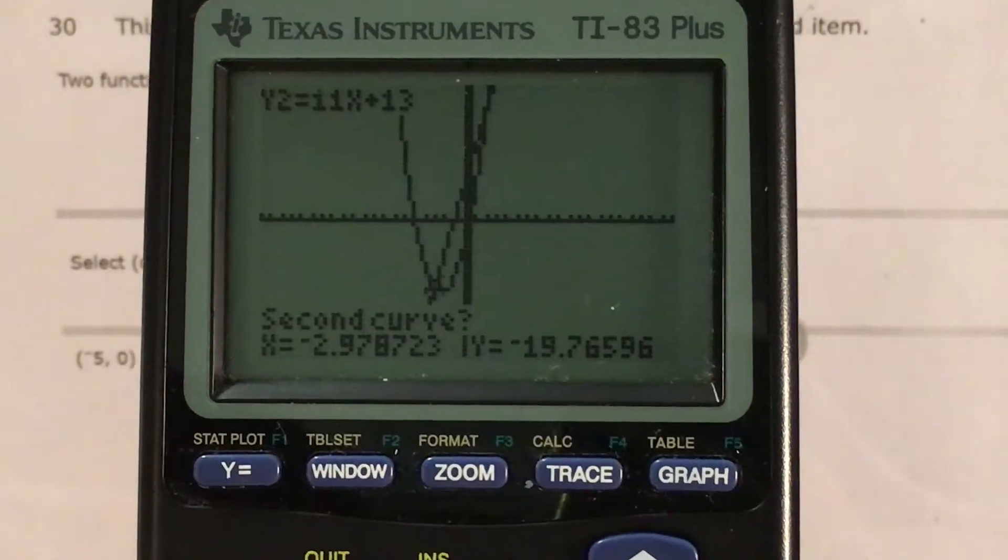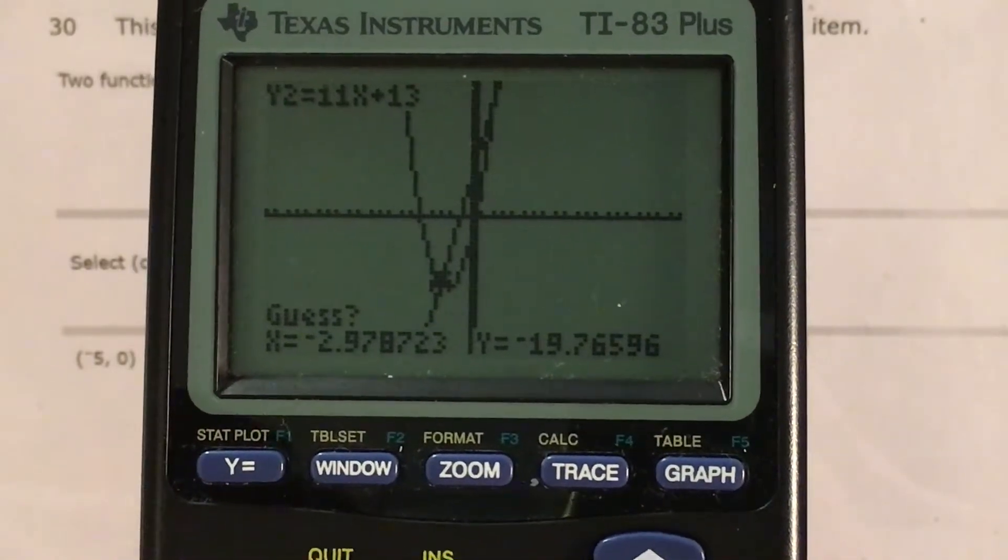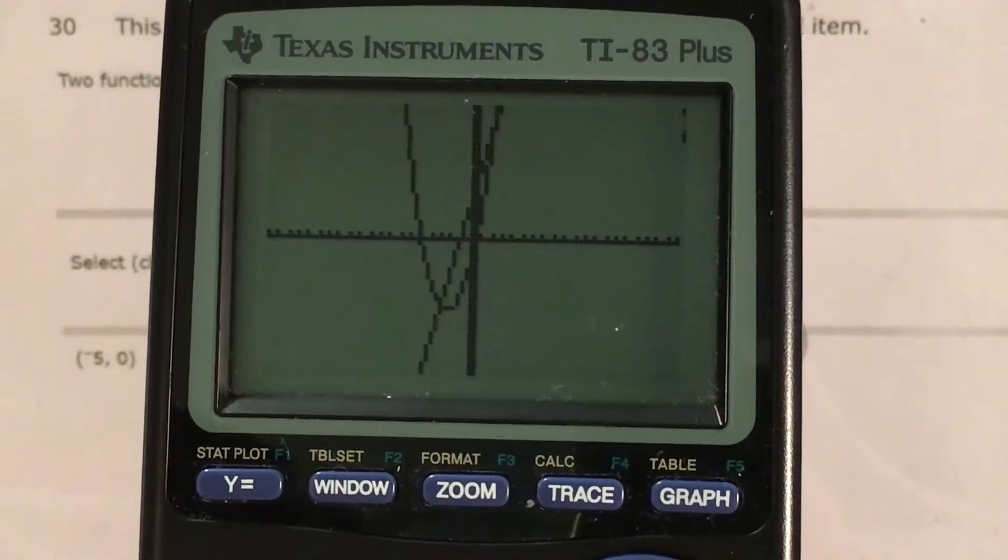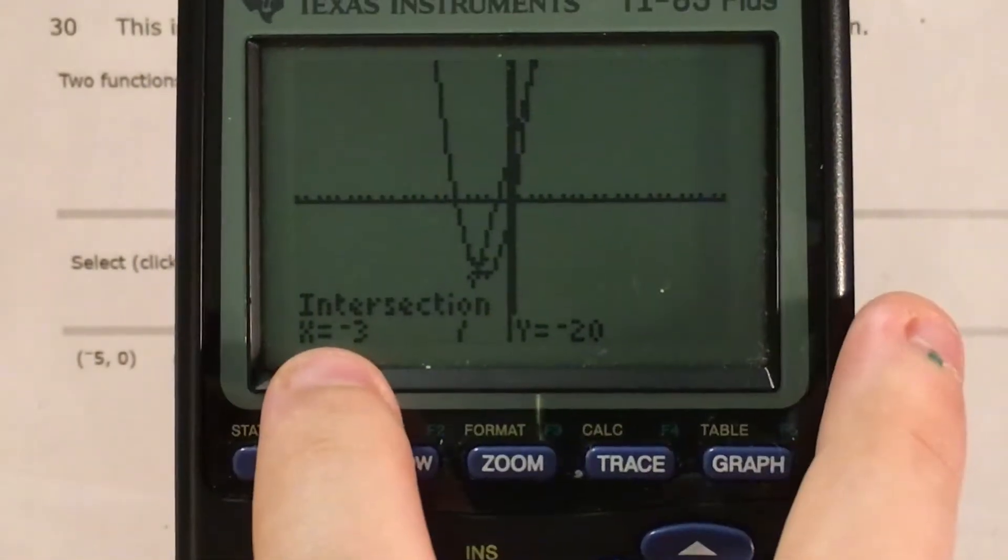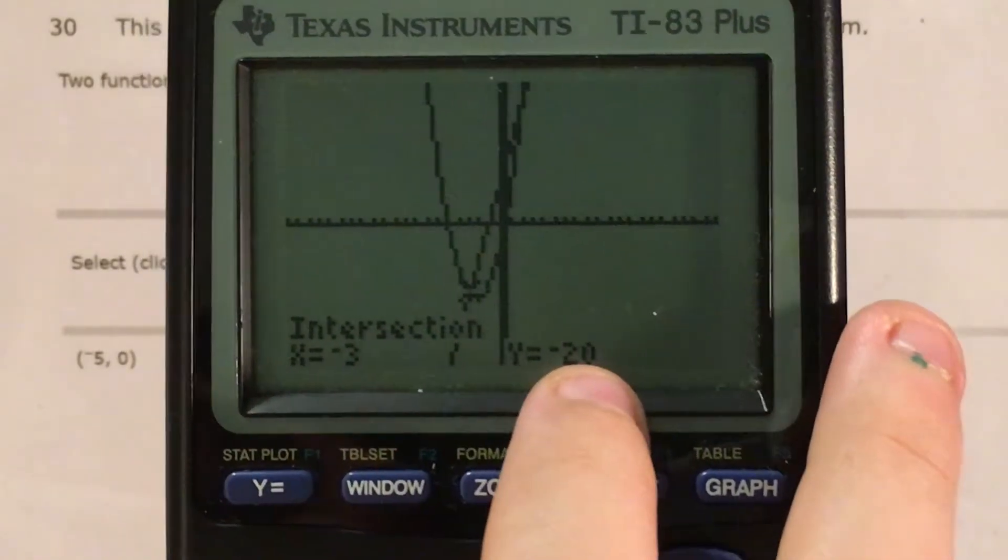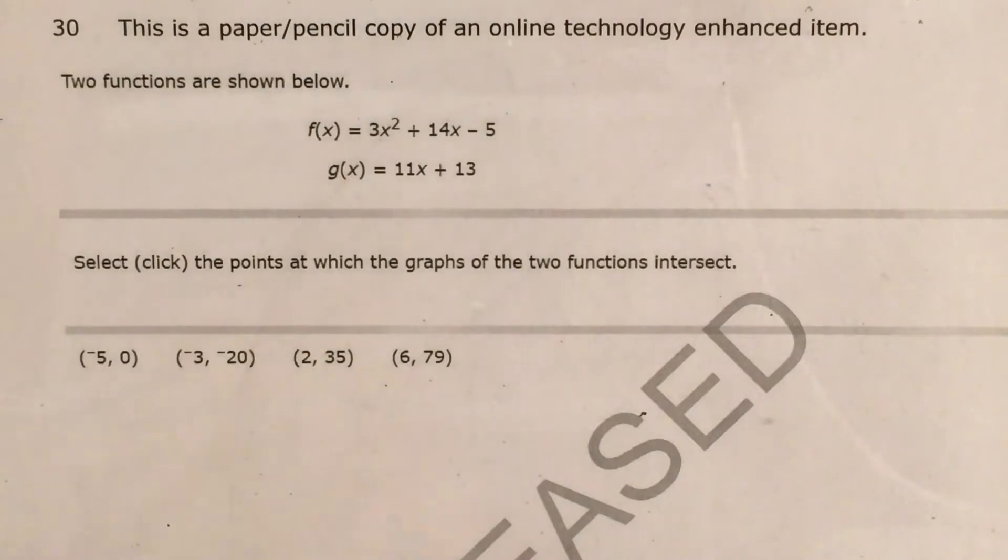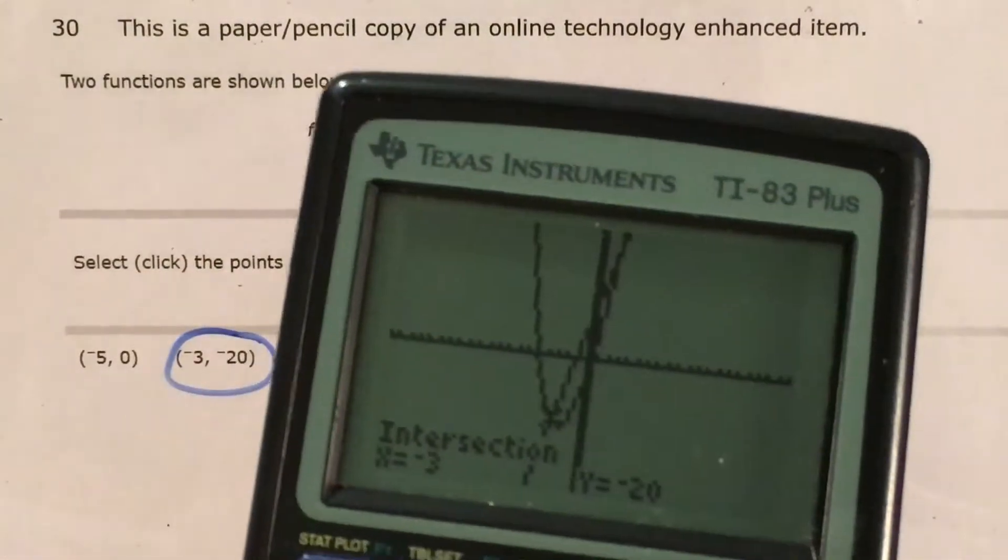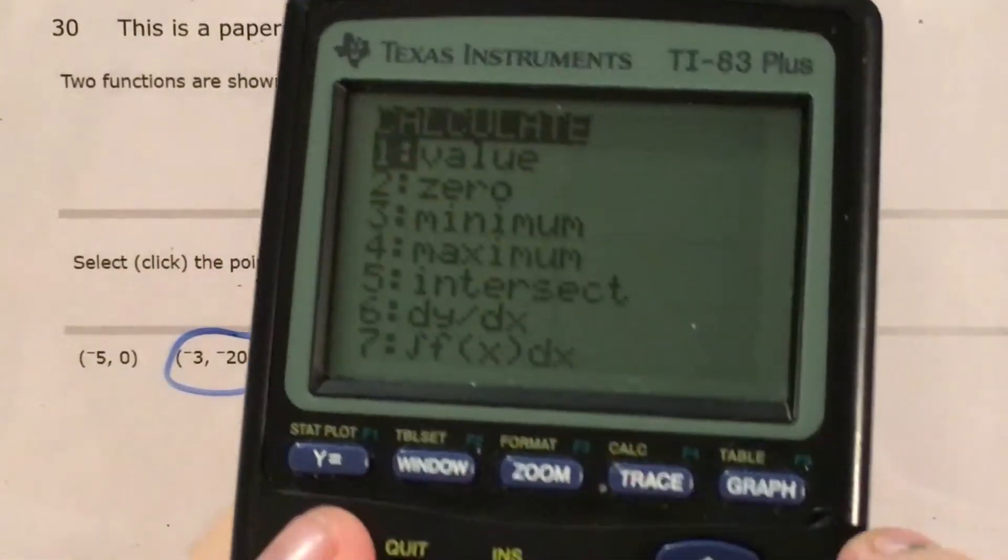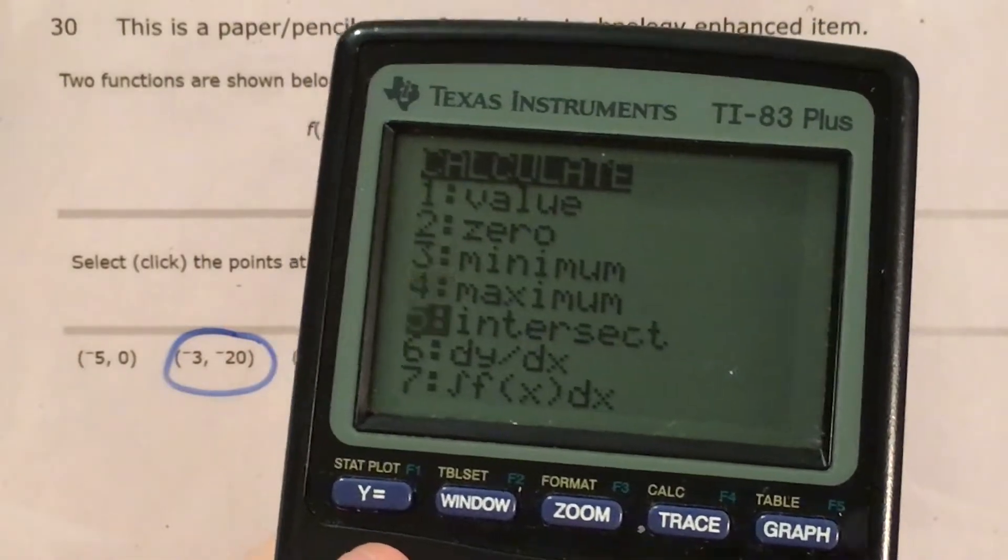Second curve, that's still really close, so I'm going to press enter again. When I say guess, here's what it gives me. x is negative 3, y is negative 20. Now these are coordinates, and this is a point. And I can actually find that point here in one of my answer choices.